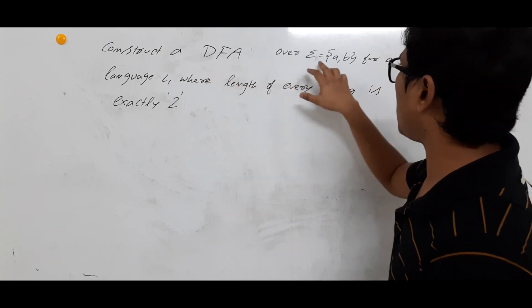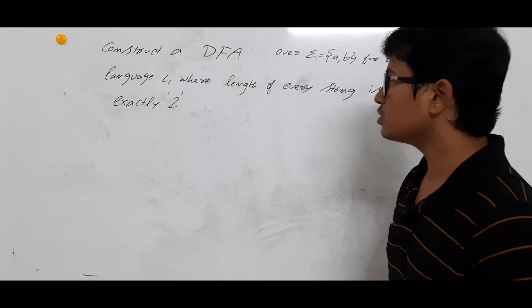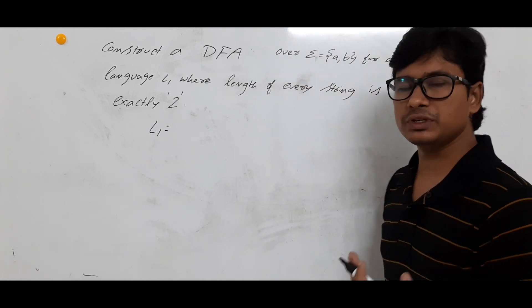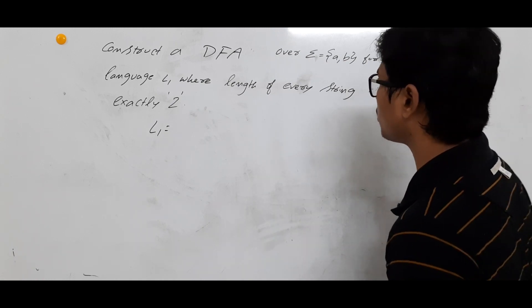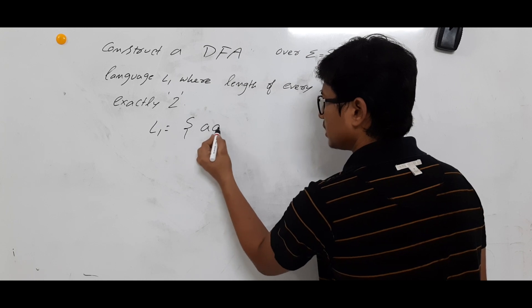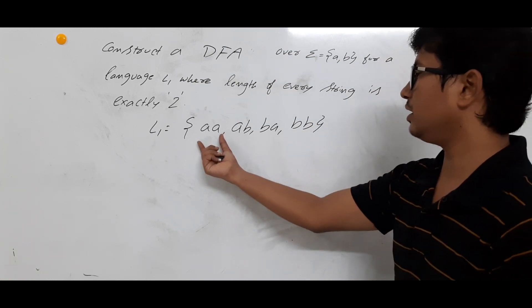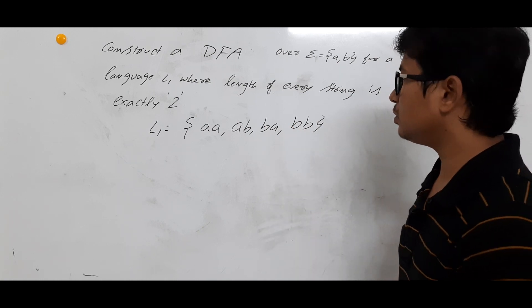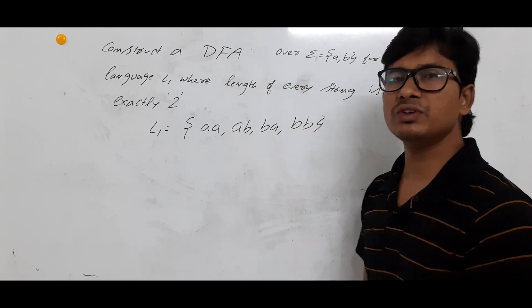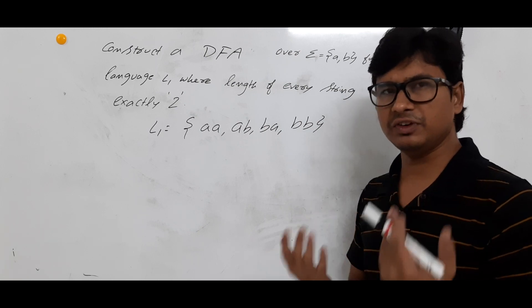The alphabets given are {a, b} and the language L1 is where the length of every string is exactly 2. The language L1 consists of all strings over alphabets {a, b} where length is exactly 2. So the possible strings are: aa, ab, ba, and bb. This is a finite language, and whether it is finite or infinite, we can represent it with finite automata.